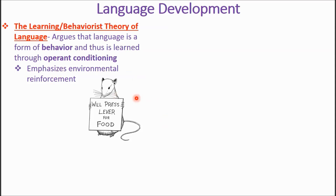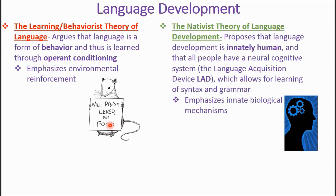The behaviorist theory is all about operant conditioning. The nativist theory of language development proposes that language development is innately human, and that all people have a neural cognitive system — the so-called language acquisition device, or LAD — which allows for learning of syntax and grammar. It emphasizes an innate biological mechanism: we're born with this and don't need any inputs from the outside world.